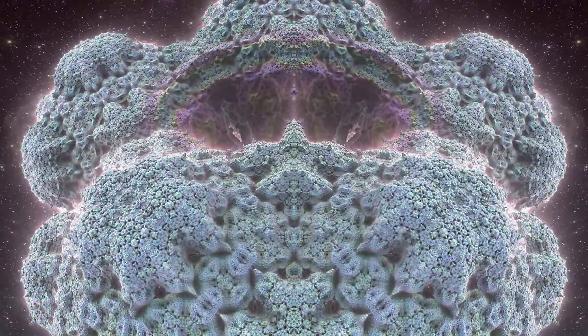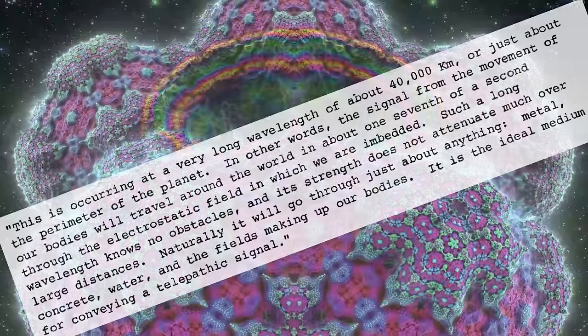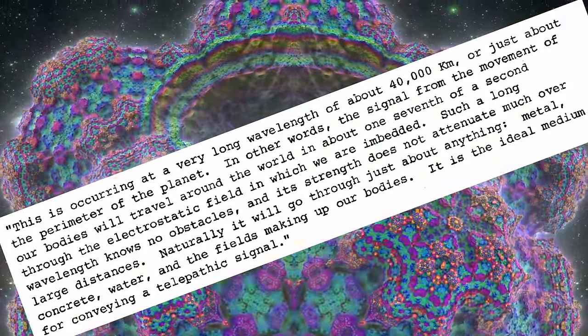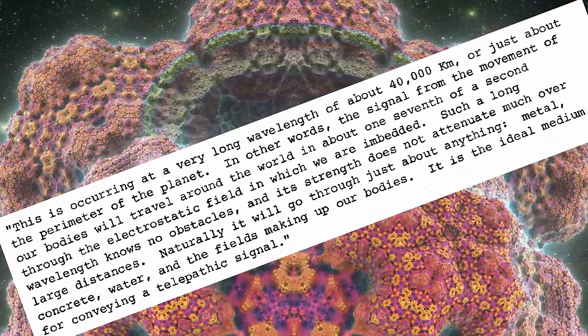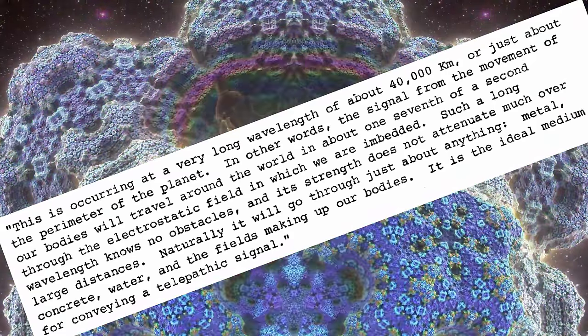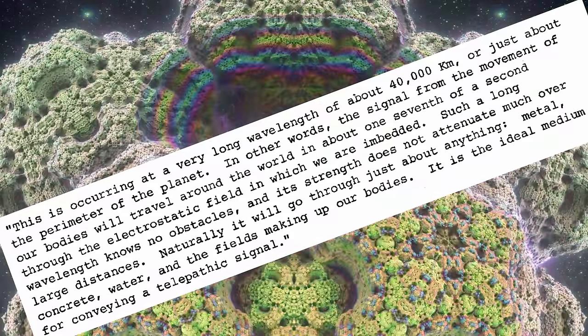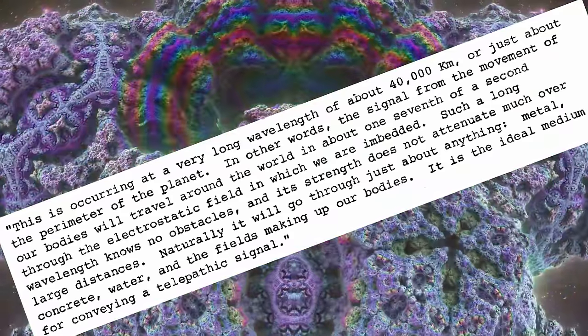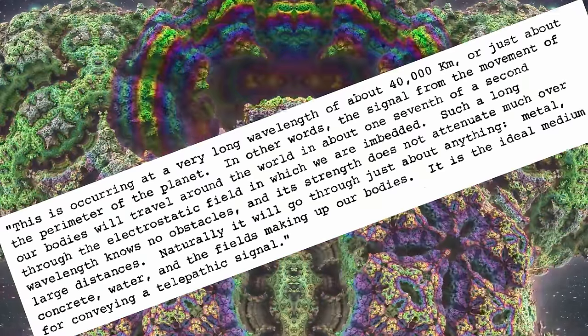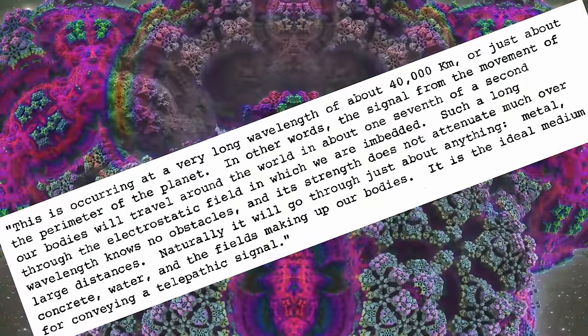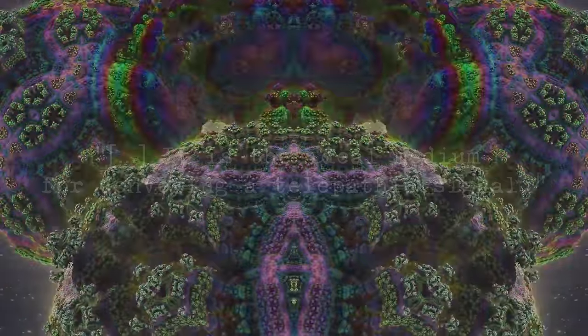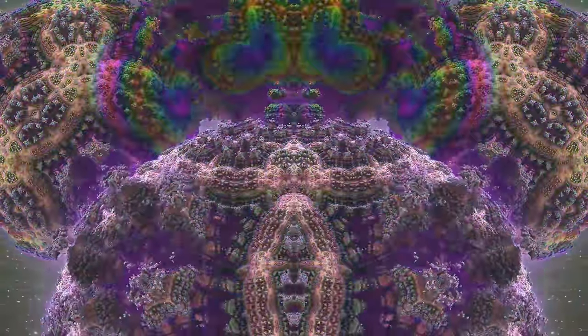Bentov himself gives us his interpretation. This is occurring at a very long wavelength of about 40,000 kilometers, or just about the perimeter of the planet. In other words, the signal from the movement of our bodies will travel around the world in about one-seventh of a second through the electrostatic field in which we are embedded. It is the ideal medium for conveying a telepathic signal.